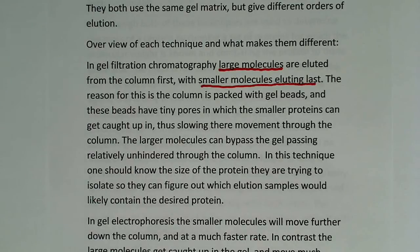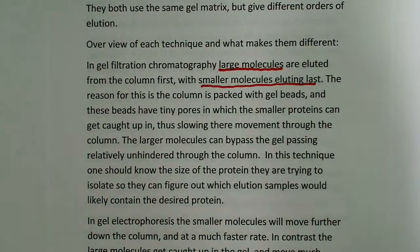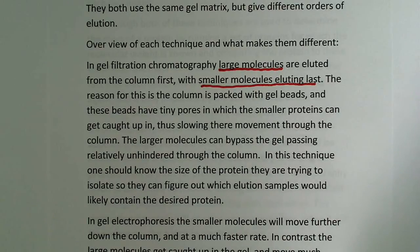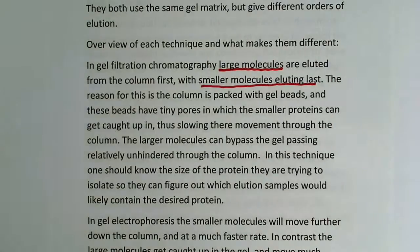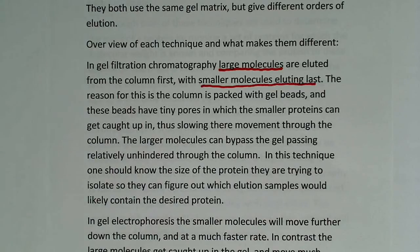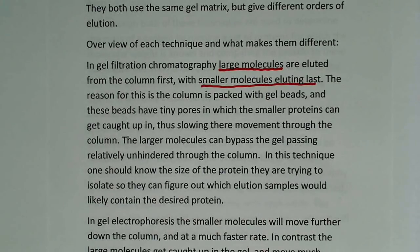Larger molecules literally cannot go through the pores because they're too big to fit, so they wind up coming out first. In this technique, one should know the size of the protein they are trying to isolate so they can figure out which elution samples would likely contain the desired protein. You're probably going to take multiple samples — maybe three, five, or ten — from the elution column, so you want to have an idea of the size to narrow down which samples to investigate further.